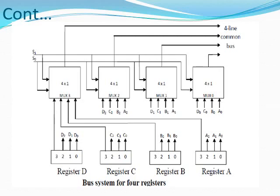This is the diagram of a bus system for 4 registers. There are 4 registers: Register A, Register B, Register C, and Register D. Each register has 4 bits numbered 0 to 3. Register A has bits A0, A1, A2, A3; Register B has bits B0, B1, B2, B3; and similarly for Register C and Register D.